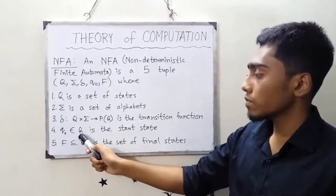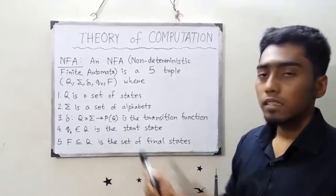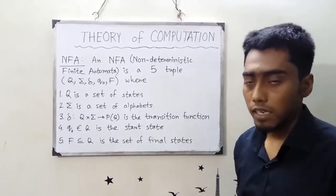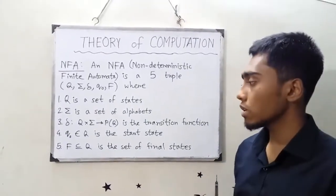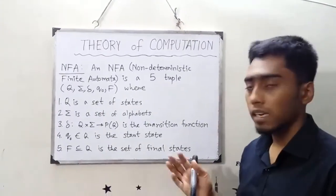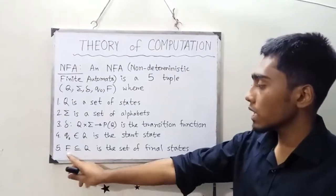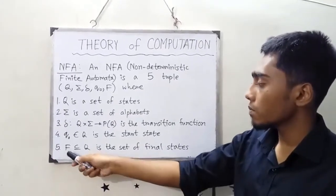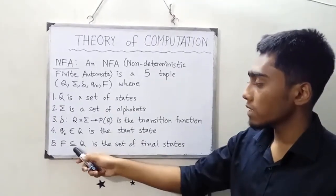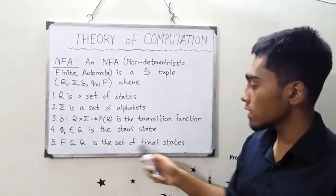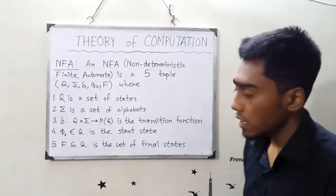Q0, an element of Q, is the start state. F, a subset of Q, is the set of final states.